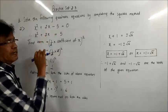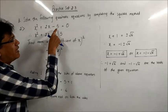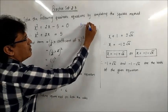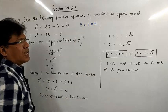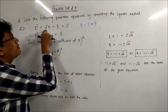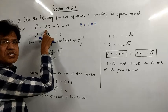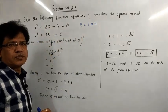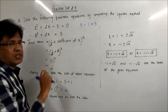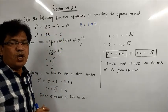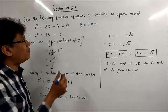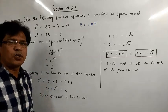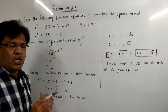Try to solve this by the factorization method - can you find factors of 5 such that the sum is 2? You will see that 5 can only be written as 1 × 5, and by any means we cannot split the middle term 2 into two factors whose sum is +2. So in this situation, factorization method fails. When factorization method fails, we have to solve this by some other method, and that is why we have the completing squares method.